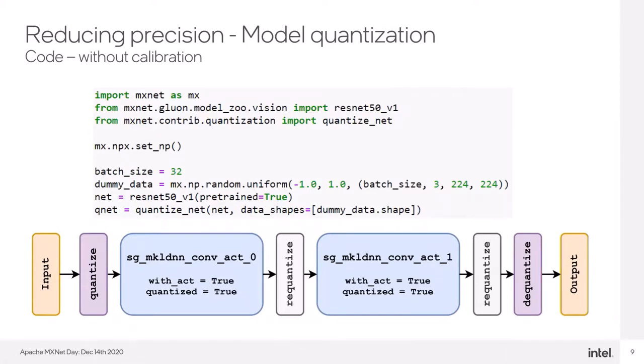Here, we have an example of how to quantize pre-trained ResNet-50 in MXNet without calibration. Again, like in the fusion case, we have to call only one function, which is quantize_net from the MXNet contrib quantization package. We pass the network and the list of input data shapes. Below, we can see the visualization on how some blocks can look like after quantization.